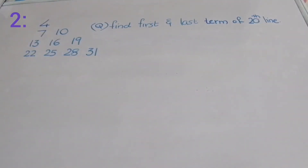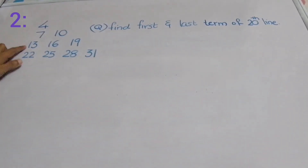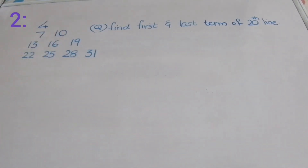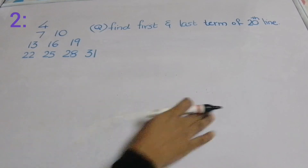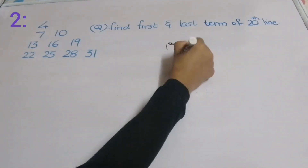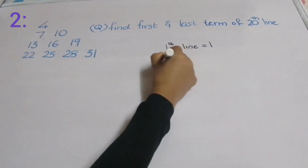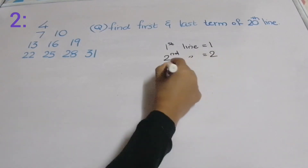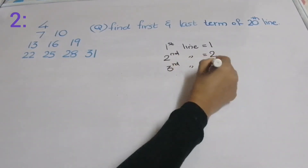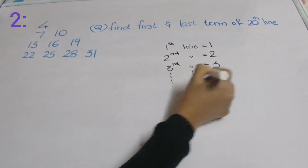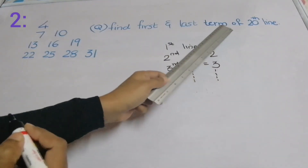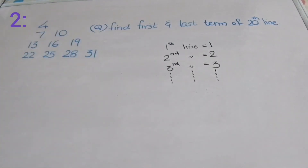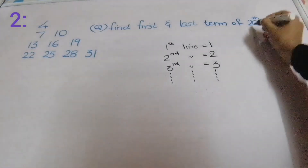Now here we have another model. The number pattern is 4, 7, 10, 13, 16, 19, 22, 25, 28, 31. The question is to find the first and last term of the 20th line. First line has one term, second line two terms, third line three terms. Again, we have to consider the previous line, so the 19th line will have 19 terms and the 20th line will have 20 terms.